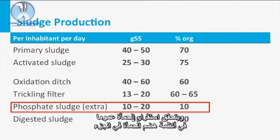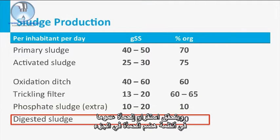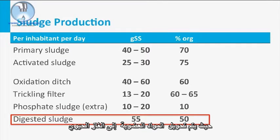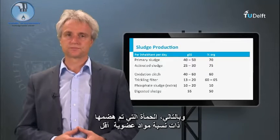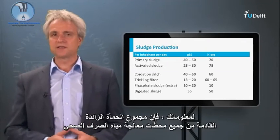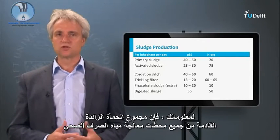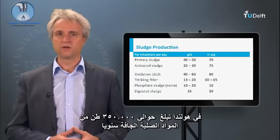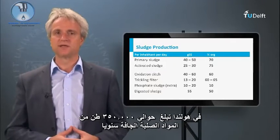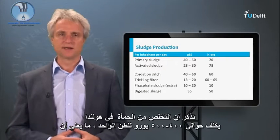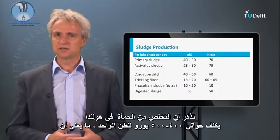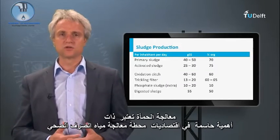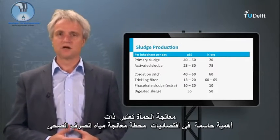Sludge stabilization is generally achieved in sludge digestion systems, in which part of the organic matter is converted to biogas. Therefore, digested sludge has a lower organic fraction. The total excess sludge mass from all sewage treatment plants in the Netherlands is about 350,000 tons of dry solids per year. With sludge disposal costing about 400 to 500 euros per tonne in the Netherlands, sludge treatment is considered of crucial importance in the economics of a sewage treatment plant.